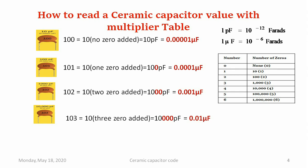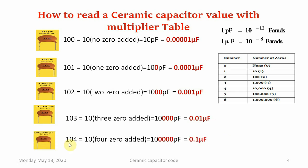If 103 is written on the ceramic capacitor, we take the first two digits 10 and append three zeros using the multiplier table, giving 10,000 picofarad, which is 0.01 microfarad. If 104 is written, we append four zeros to get 100,000 picofarad, which is also 0.1 microfarad. In this way we calculate the different ceramic capacitor values by converting into picofarad or microfarad.